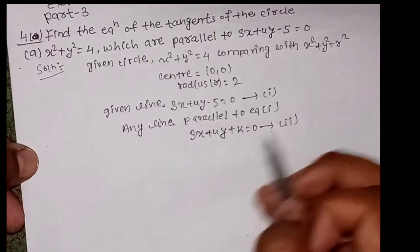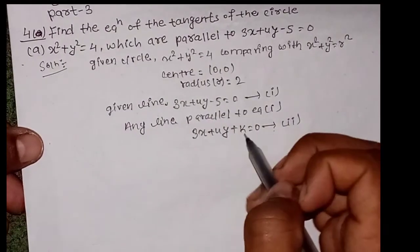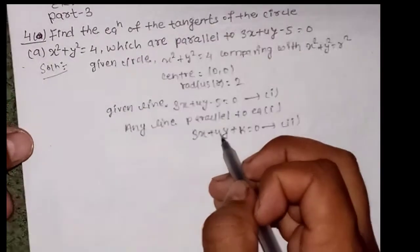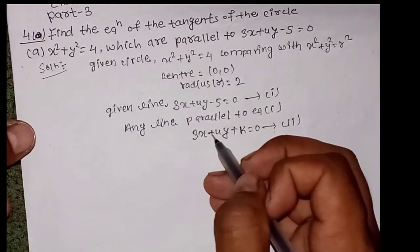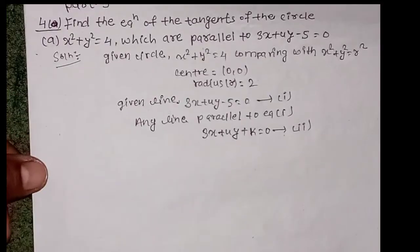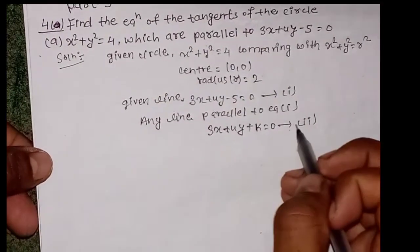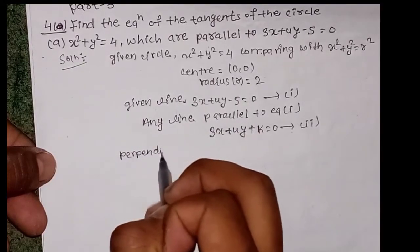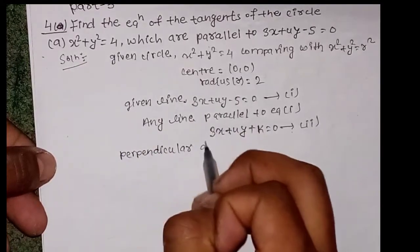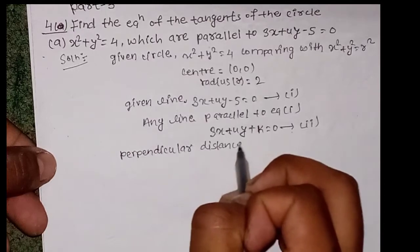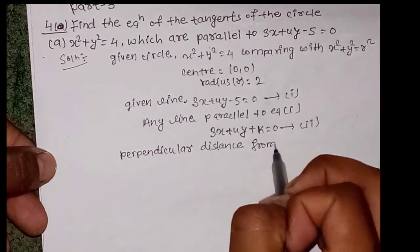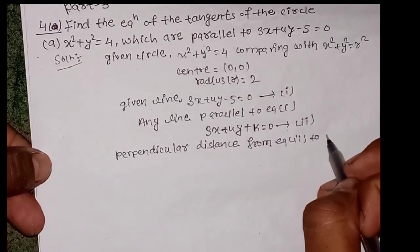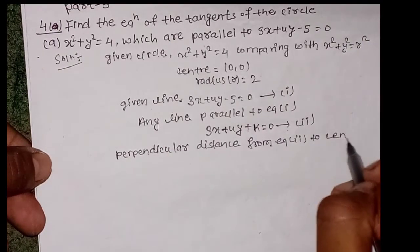For a parallel line, only the constant term changes. So we write 3x + 4y + k = 0 as equation 2. The perpendicular distance from equation 2 to the center must equal the radius.